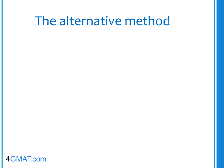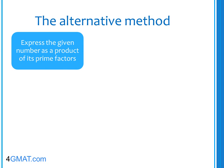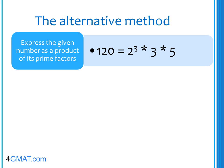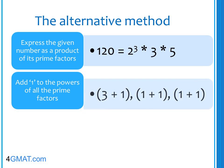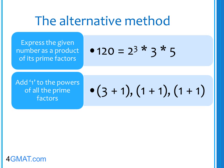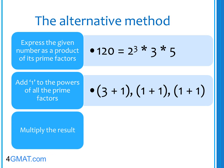The third method does not use any brute force — it is an elegant three-step process. The first step: express the given number as a product of its prime factors. 120 can be expressed as 2 cubed into 3 into 5. Second, add 1 to the powers of all prime factors: the power of 2 is 3, the power of 3 is 1, and the power of 5 is 1, giving us (3+1), (1+1), and (1+1). The third step: multiply the results — 4 into 2 into 2 equals 16, which is the total number of factors.